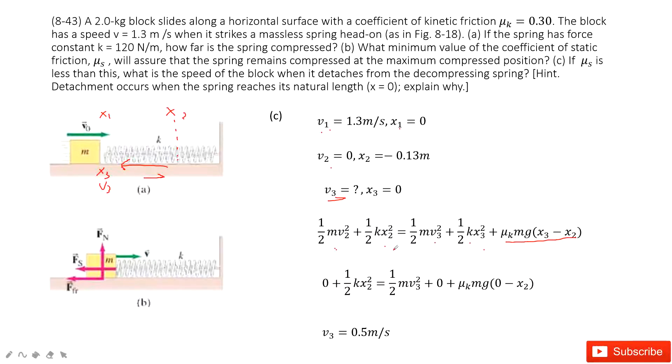So very easily, we can see, after we input the known quantity, this term 0, this term x3 is 0, and this term 0. So we can solve this equation and get v3 is 0.5 meter per second.